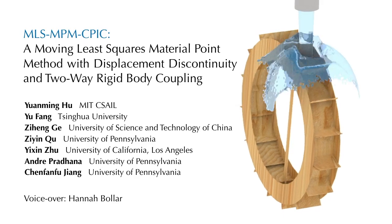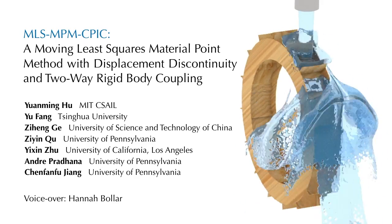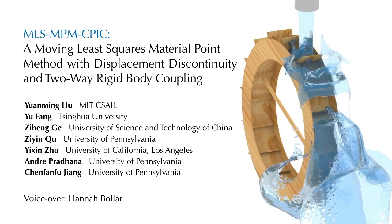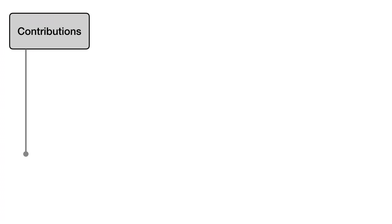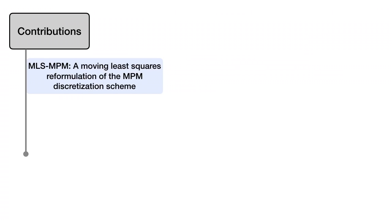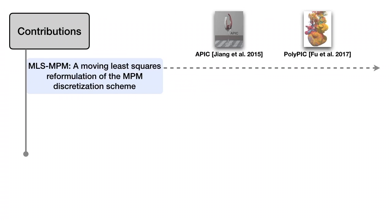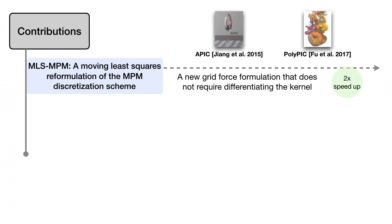We present the moving least squares material point method for efficient simulation of various physical phenomena. MLS-MPM unifies affine and polynomial particle and cell methods and forced discretization in a weak form consistent way. As a result, MLS-MPM is not only two times faster than traditional MPM, but also easier to implement and optimize.